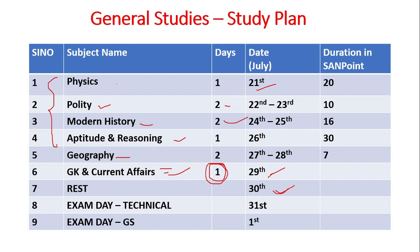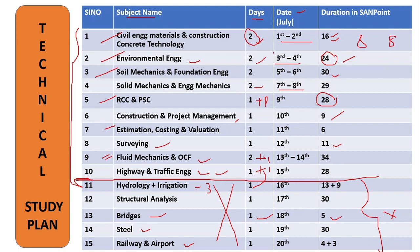The 30th day is your rest period. If possible, try doing some revision — go through formulas and turn the pages of your notes. But do not panic too much; relax that day. The 31st day is your exam day — first will be Technical, then General Studies. This is the end of the story for your WRD exam.